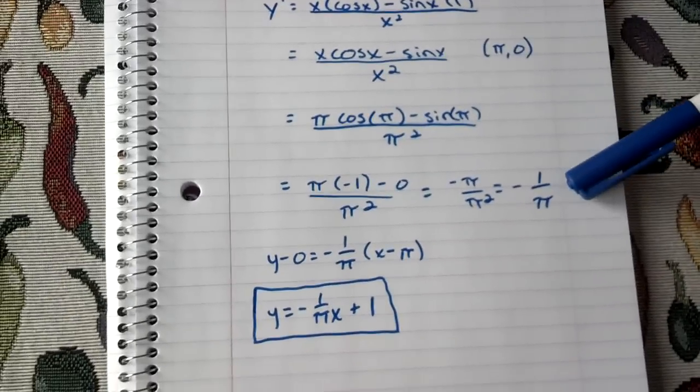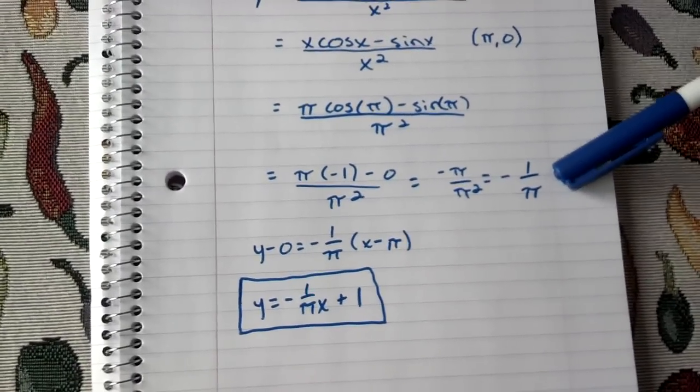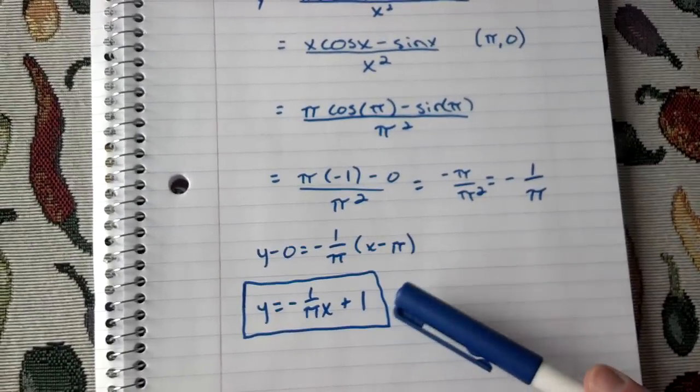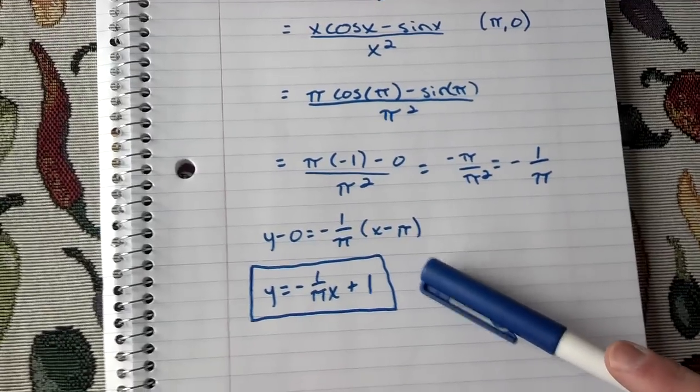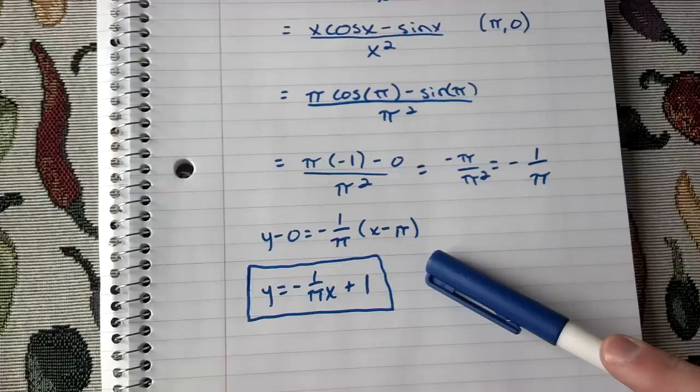Once you get this, this is actually the slope of your tangent line. So you have to plug that into the equation. y minus 0 equals negative 1 over pi multiplied by x minus pi.